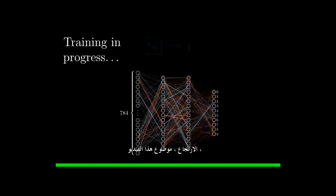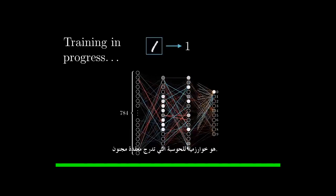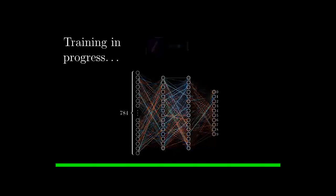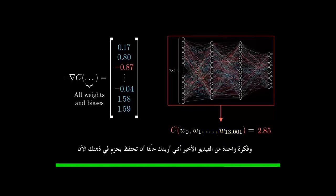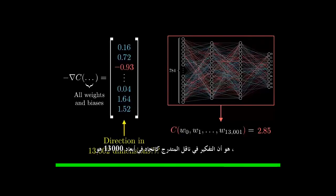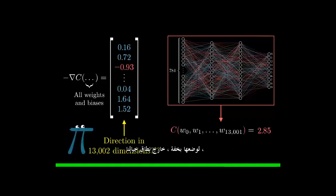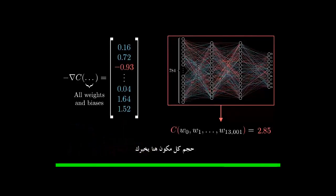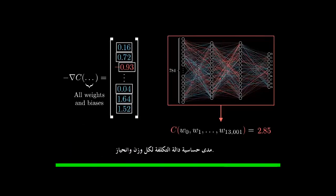Backpropagation, the topic of this video, is an algorithm for computing that crazy complicated gradient. And the one idea from the last video that I really want you to hold firmly in your mind right now is that because thinking of the gradient vector as a direction in 13,000 dimensions is, to put it lightly, beyond the scope of our imaginations, there's another way you can think about it. The magnitude of each component here is telling you how sensitive the cost function is to each weight and bias.